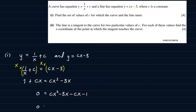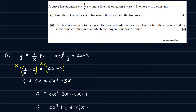So I can rearrange this. I'll have 0 = cx², and here I can factor out the x since it's common, so it becomes plus x(−3 − c) − 1. So I now have this quadratic equation combining the two equations — the equation of the curve and the equation of the line.